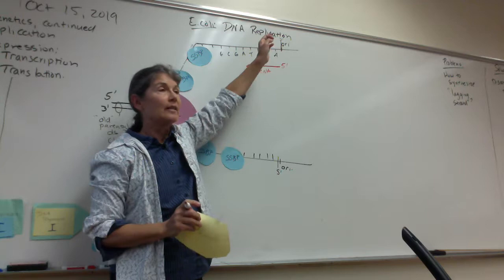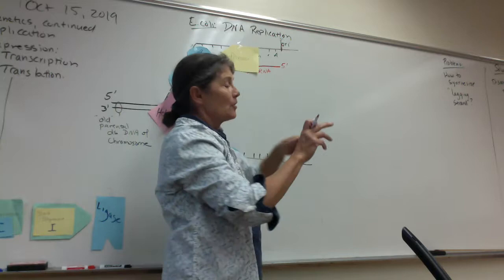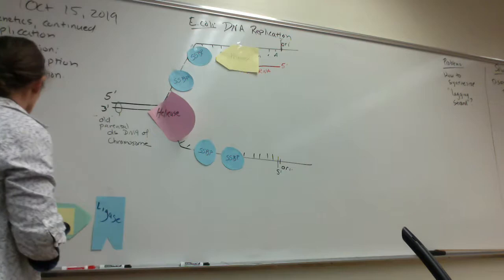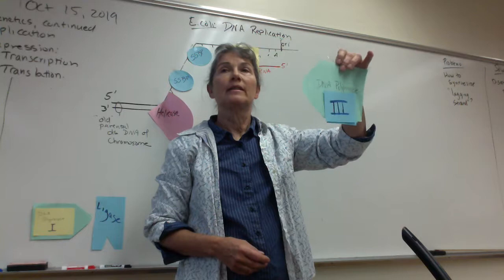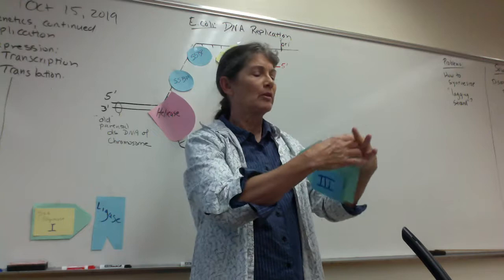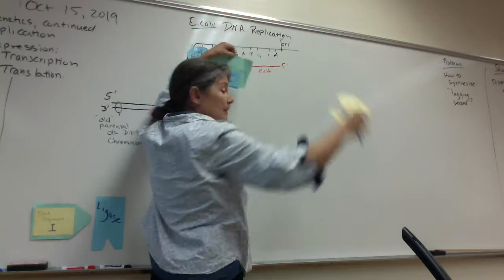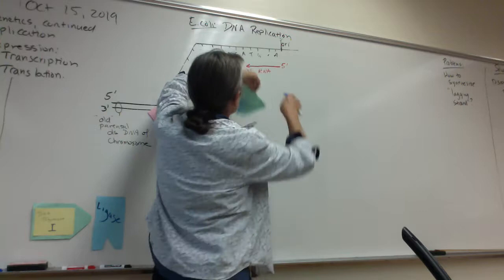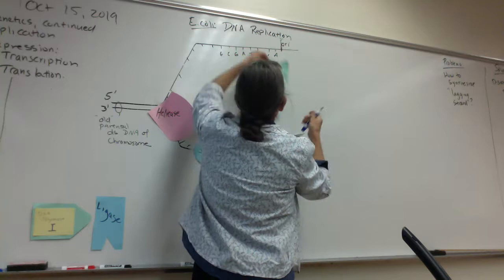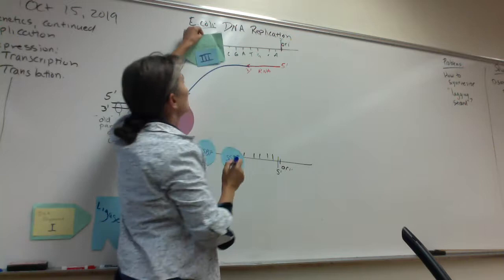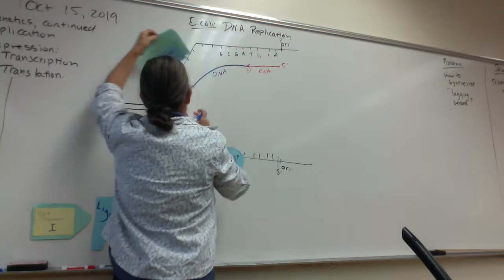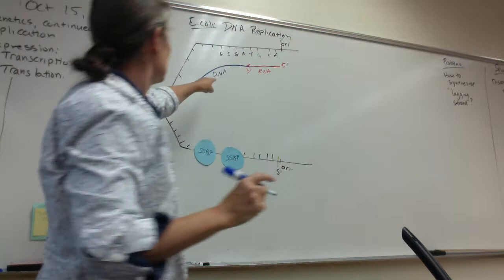Once a short primer has been made, DNA polymerase can take over. In E. coli, DNA polymerase 3 does most of the DNA synthesis — it's the workhorse. Once the primer is there, DNA polymerase 3 will bump in, bumping off the single-strand binding proteins, and use the primer to get started. It's going to keep going, copying the chromosome all the way down to the termination of replication.